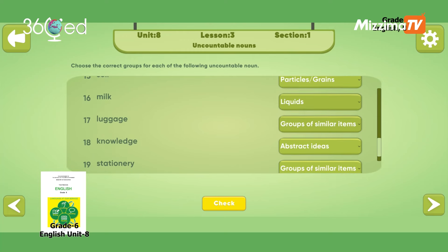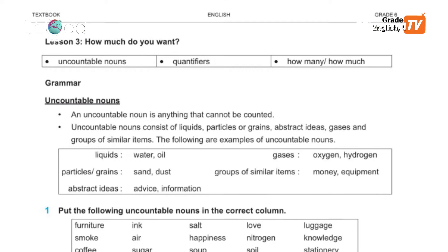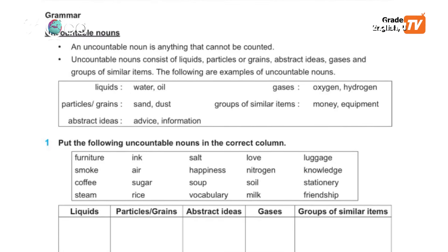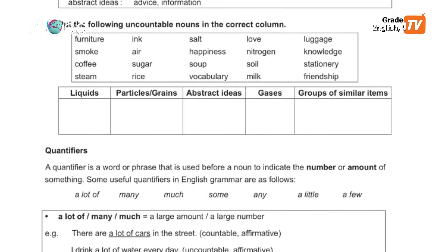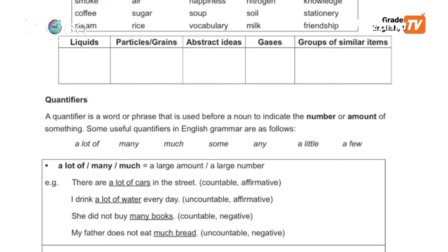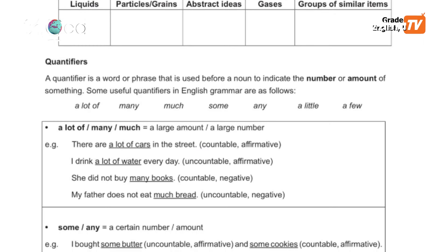A quantifier is a word or phrase used before a noun to indicate the number or amount of something. Some useful quantifiers in English grammar are: a lot of, many, much, some, any, a little, a few.